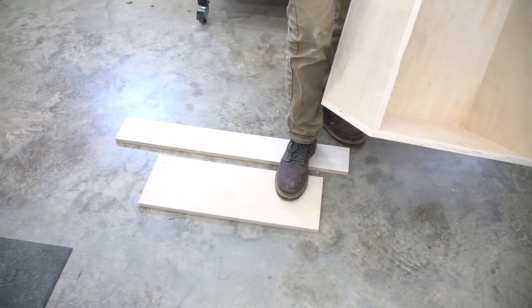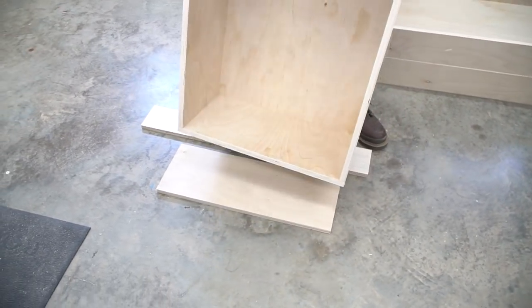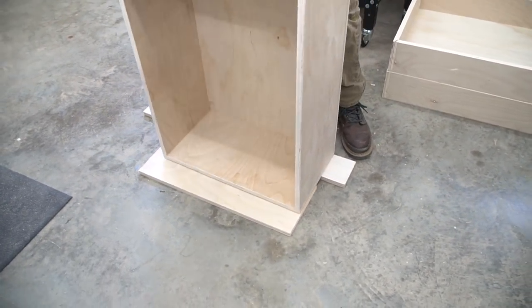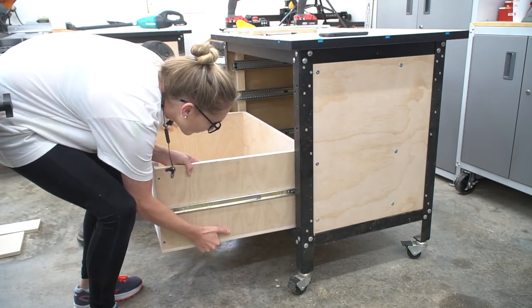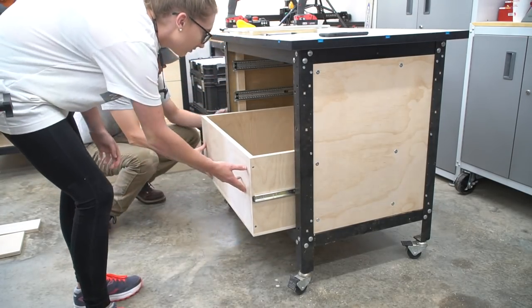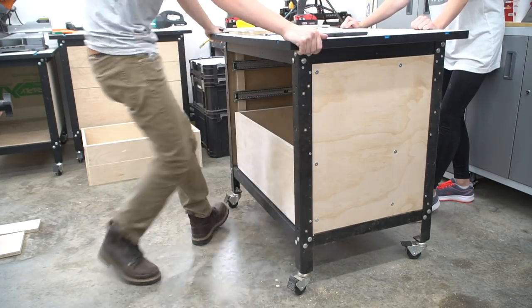When you flip the drawer over, use some scraps to keep the slide that you just installed from being banged up. Lastly, slide the whole drawer back into the slides. With these slides, we had to pull the ball bearings forward before sliding the drawers in place.